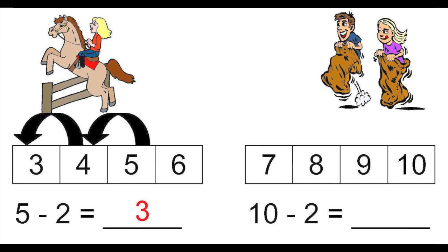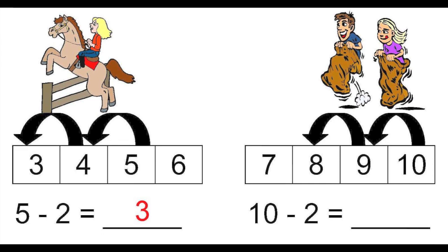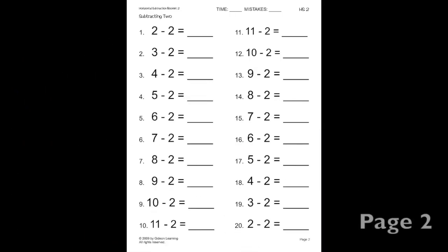Let's do one more. Next to it, we have 10 minus 2. So, once again, 9 is 1 number before 10, and then 8 is 2 numbers before 10. So, 10 minus 2 equals 8, because 8 is 2 numbers before 10. Now let's go on to the next page and we can practice some more subtracting 2.